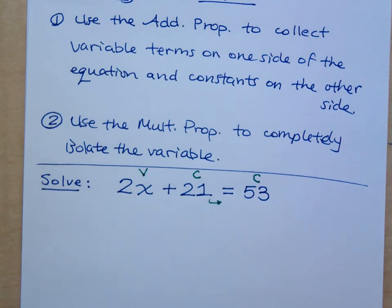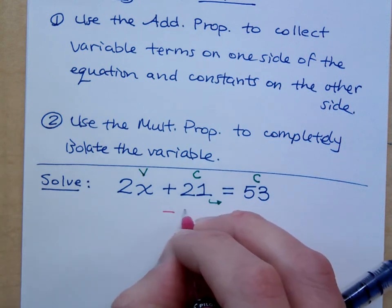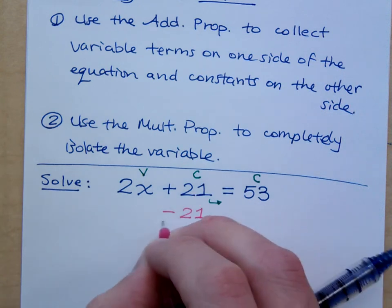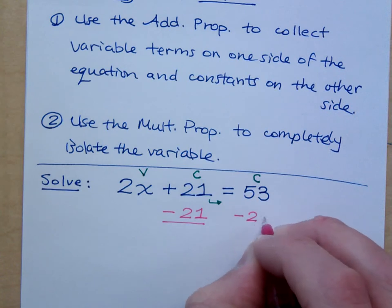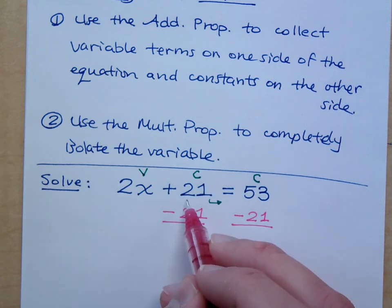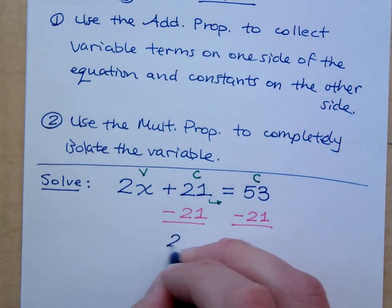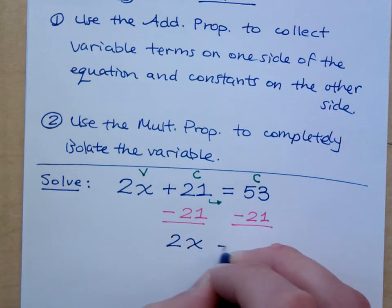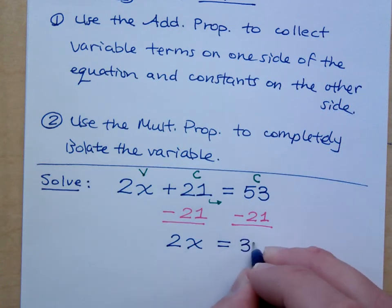So I'll do that by subtracting 21 on both sides. Will that cancel out the positive 21 that I have here? Right. So combine this, and then you have 2x equals how much? 32. Do you all agree with that?